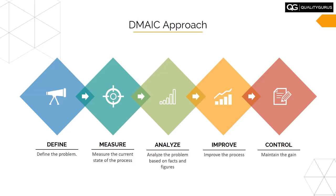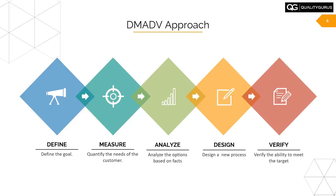Then we'll look at the two main approaches of Six Sigma: DMAIC and DMADV. The DMAIC approach — Define, Measure, Analyze, Improve, and Control — is used for improving an existing process. We'll also briefly cover the DMADV approach, which is used to design a new process that is aligned with Six Sigma principles.